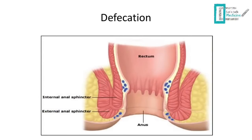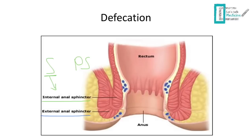The final part is defecation. Once content reaches the rectum and anus, two sphincters regulate defecation. The internal anal sphincter is smooth muscle, controlled by sympathetic — through lumbar splanchnic nerves — and parasympathetic through pelvic splanchnic nerves. The external anal sphincter is skeletal muscle, regulated by the inferior rectal branch of the pudendal nerve, and it relaxes during defecation.